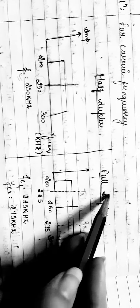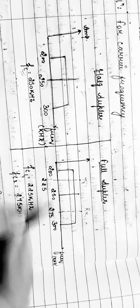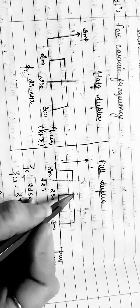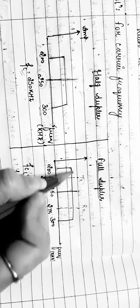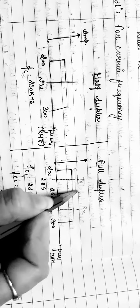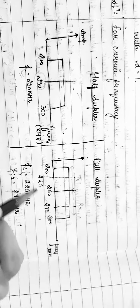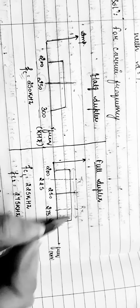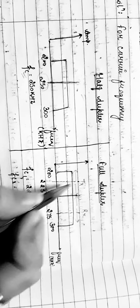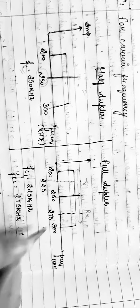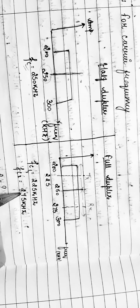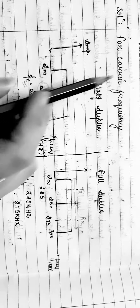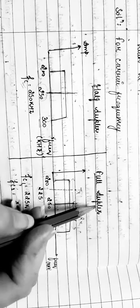For full duplex, the band also spans from 200 to 300 kilohertz. This rectangular wave is used for the transmitter side as well as at the receiver side. The carrier frequency FC1 will be 225 kilohertz, and for the receiver wave the carrier frequency will be 275 kilohertz. By this we can calculate the carrier frequency for both half duplex and full duplex.